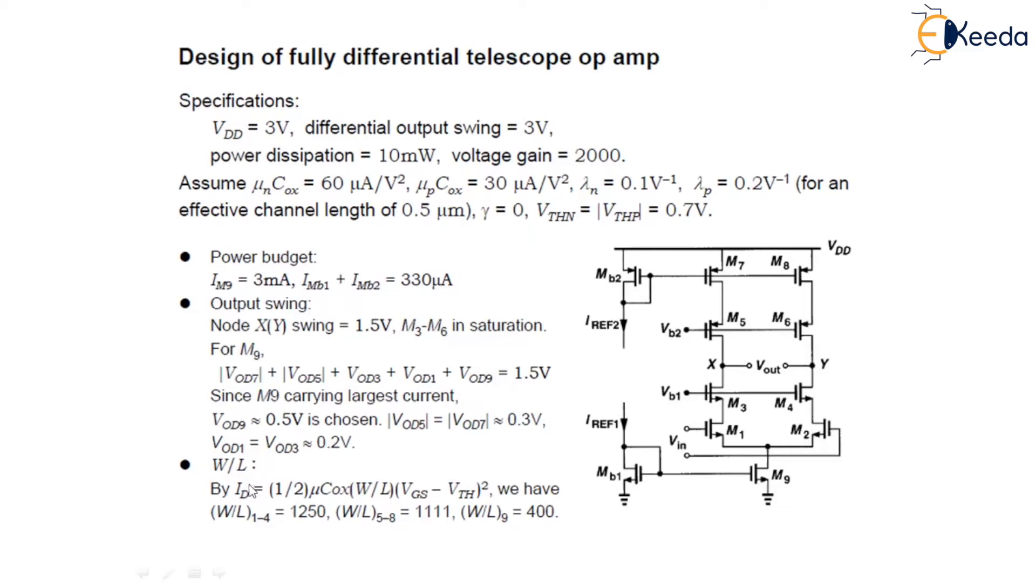Where W by L, this W by L issue can be designed by having a value of this current ID drain current using the saturation equation. So, this is an equation that is half μn Cox W by L VOD squared is equal to 1.5 milliamperes. Setting all the values, you can find W by L for transistor 1 to 4 is equals to 1250. While for W by L for transistor 5 to 8 is 400.